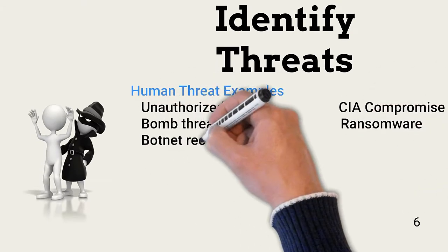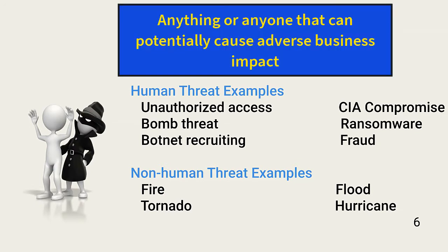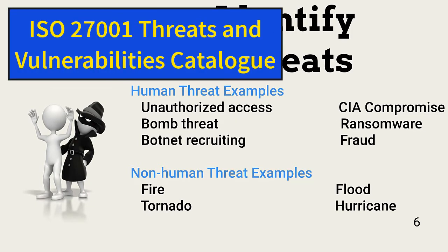Threats are anything or anyone that has the potential to cause adverse business impact. In this lesson, business impact involves interruption of business functions or CIA compromise. This is a short list of threats. The ISO 27001 Threat Catalog is a good reference to identify all threats that are probable, given an organization's geographic location, industry, and the data it collects and manages.